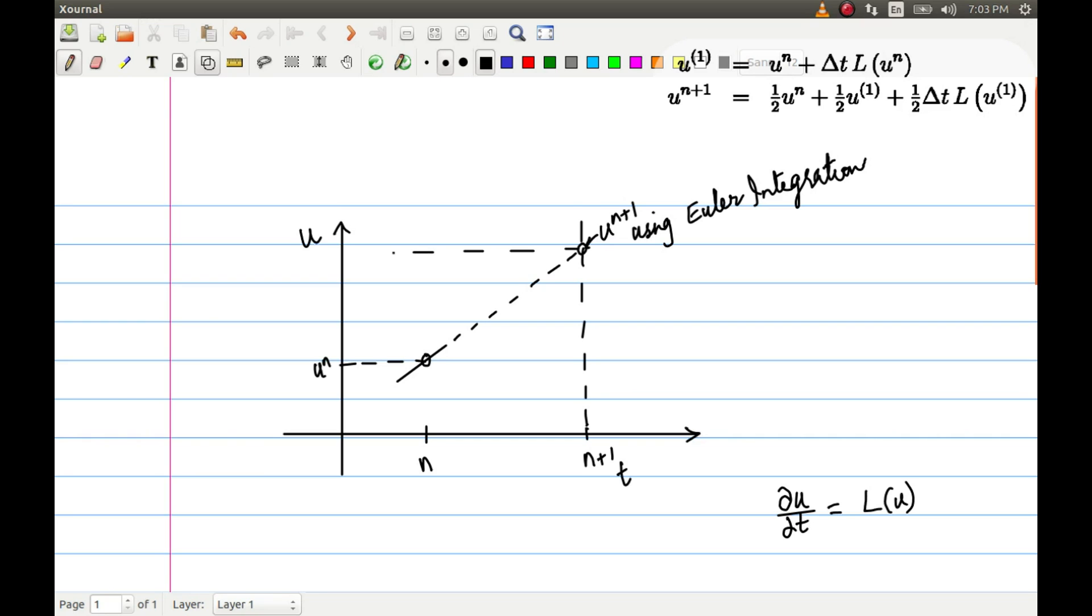That is done by using the second step. What is done is we take an average of these two values. Whatever we achieved here is u^(1). We take an average of these two values and then we advance by going half the time step, using the slope at the intermediate point. Let's assume we get a new slope at this point, and then we advance in half the time. This distance is Δt.